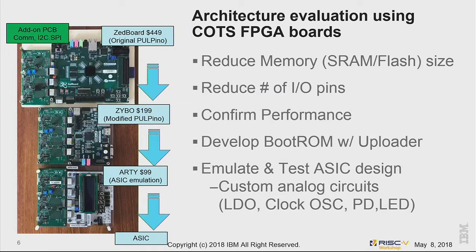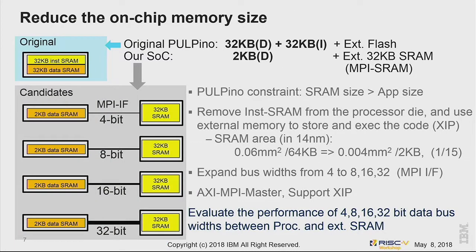Using this FPGA platform, we evaluated several choices. First, we reduced the on-chip memory size. The original has 32 kilobytes data and 32 kilobytes instruction, with code stored in external flash memory. We eliminated the whole instruction memory and moved it outside, and reduced the data SRAM to 2 kilobytes. We evaluated several applications and confirmed that 2 kilobytes is the minimum requirement to run the target application.